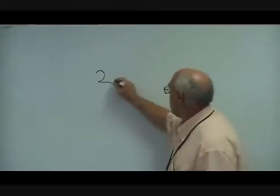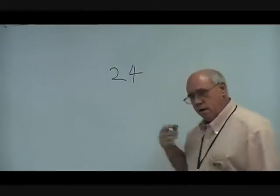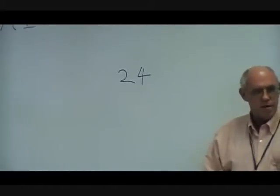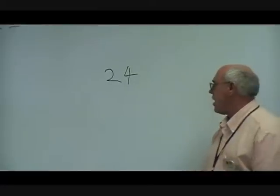Transformers are rated in VA — that's volt-amperes. One way you can determine the capacity of a transformer is through Ohm's law: P equals I times E, which is current times voltage. For example, with a 24-volt output, standard transformer ratings would be 20 VA or 40 VA — those are pretty standard, though other ratings exist.